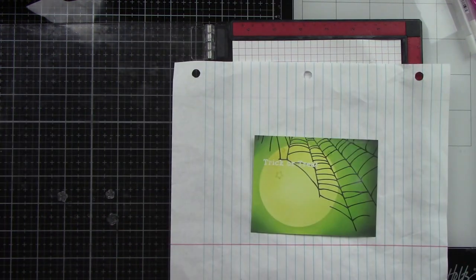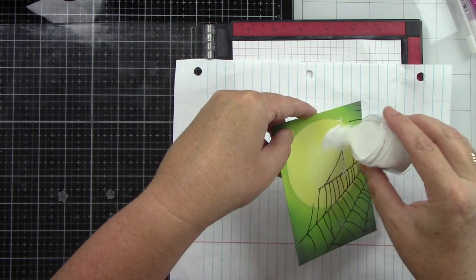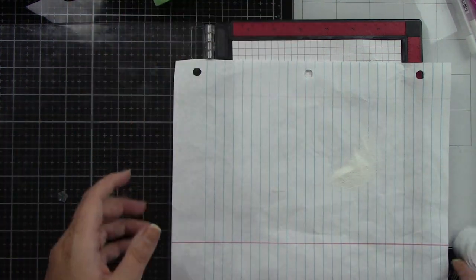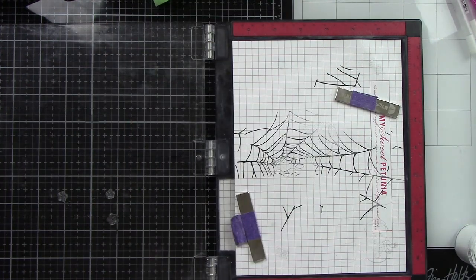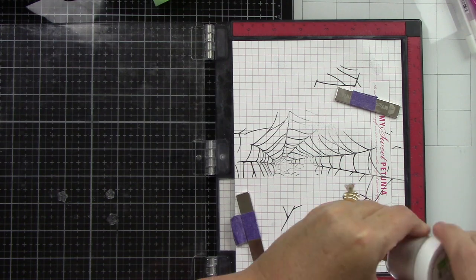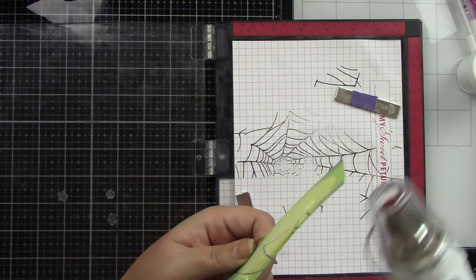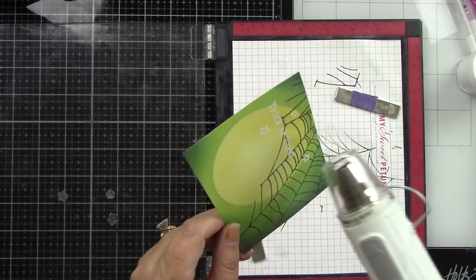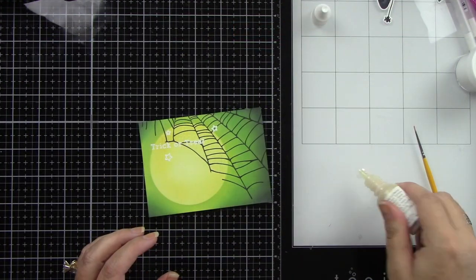Heat that until it's melted—exactly what I did for the Trick or Treat sentiment. I have my heat tool already on nice and hot so my paper doesn't warp as much and it melts much quicker.